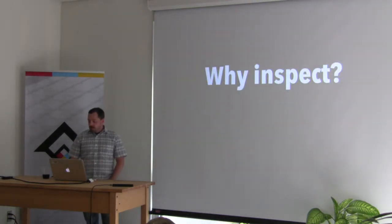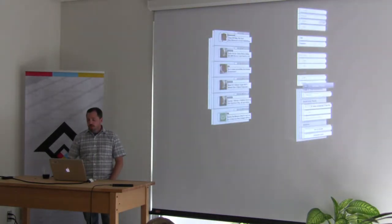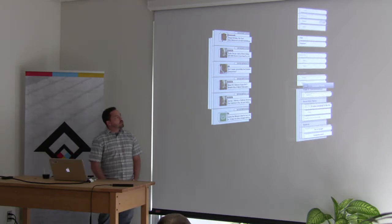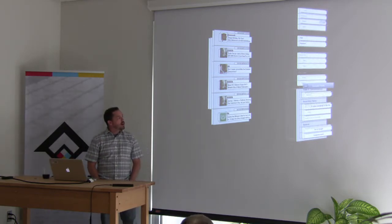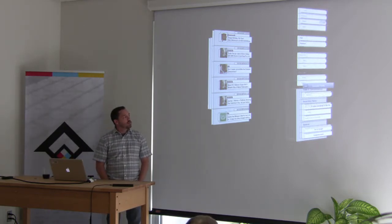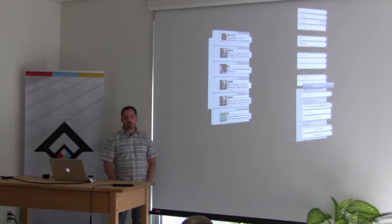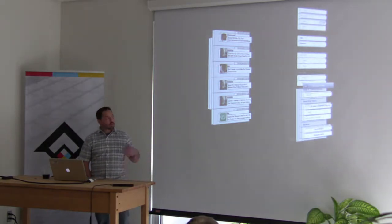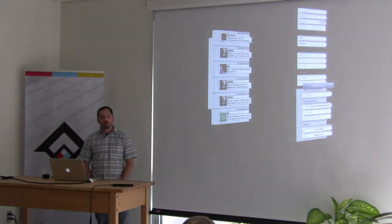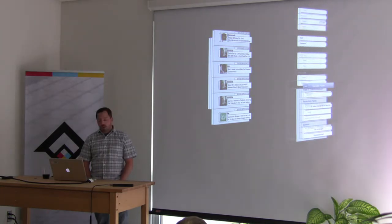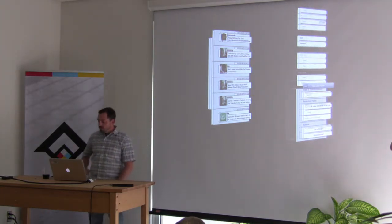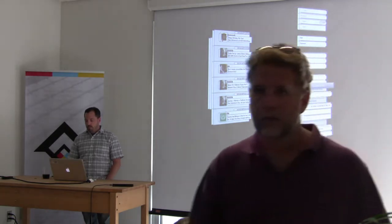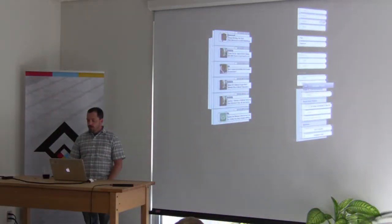So why inspect? One reason you might want to inspect your UI is to find things like view accumulations. You can easily and quickly see whether or not your table cells are being reclaimed or not, which can identify a big performance issue. It shows you things off screen too, and I'll show another example of that soon.